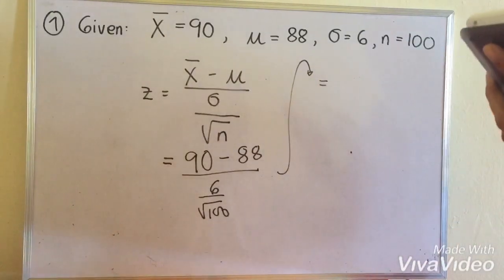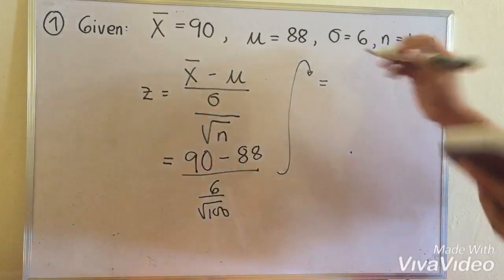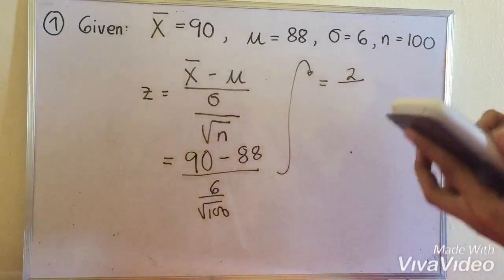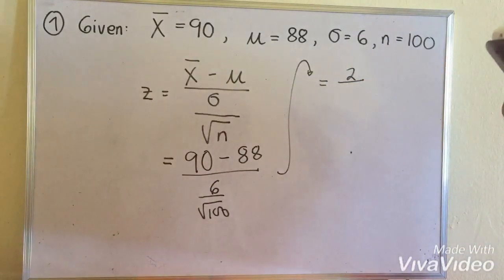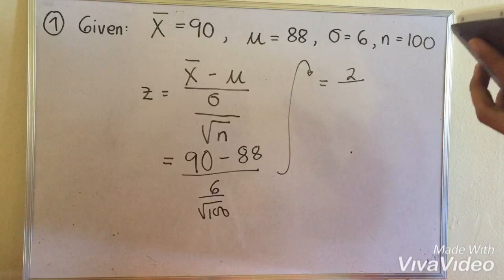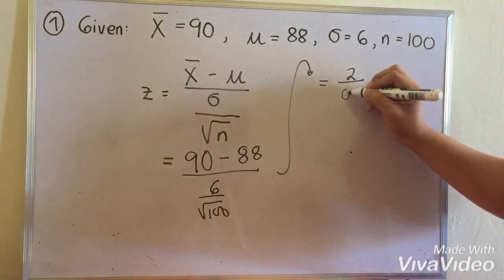That's going to be 90 minus 88, that's 2, over 6 divided by the square root of 100.